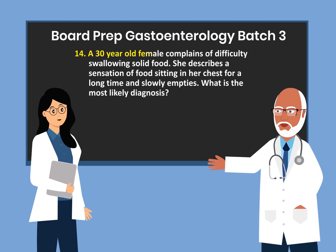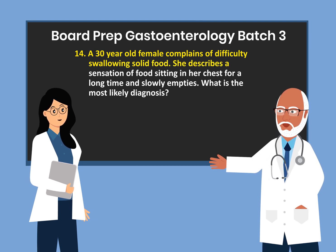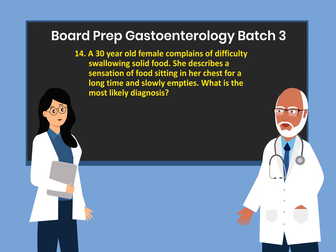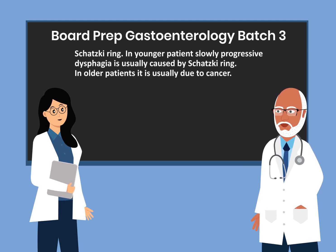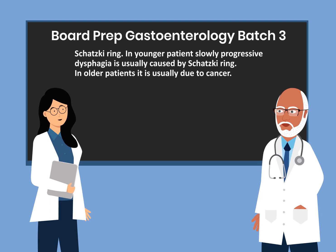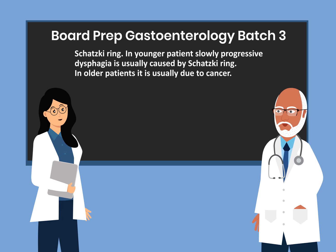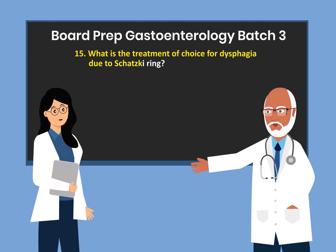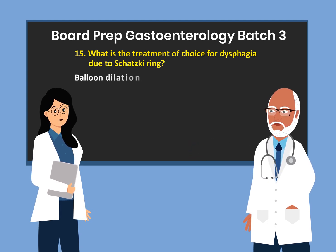Question 14. A 30-year-old female complains of difficulty swallowing solid food. She describes a sensation of food sitting in her chest for a long time and slowly emptying. What is the most likely diagnosis? Schatzki ring. In younger patients, slowly progressive dysphagia is usually caused by Schatzki ring. In older patients, the same symptom is usually due to cancer. Question 15. What is the treatment of choice for dysphagia due to Schatzki ring? Balloon dilation.